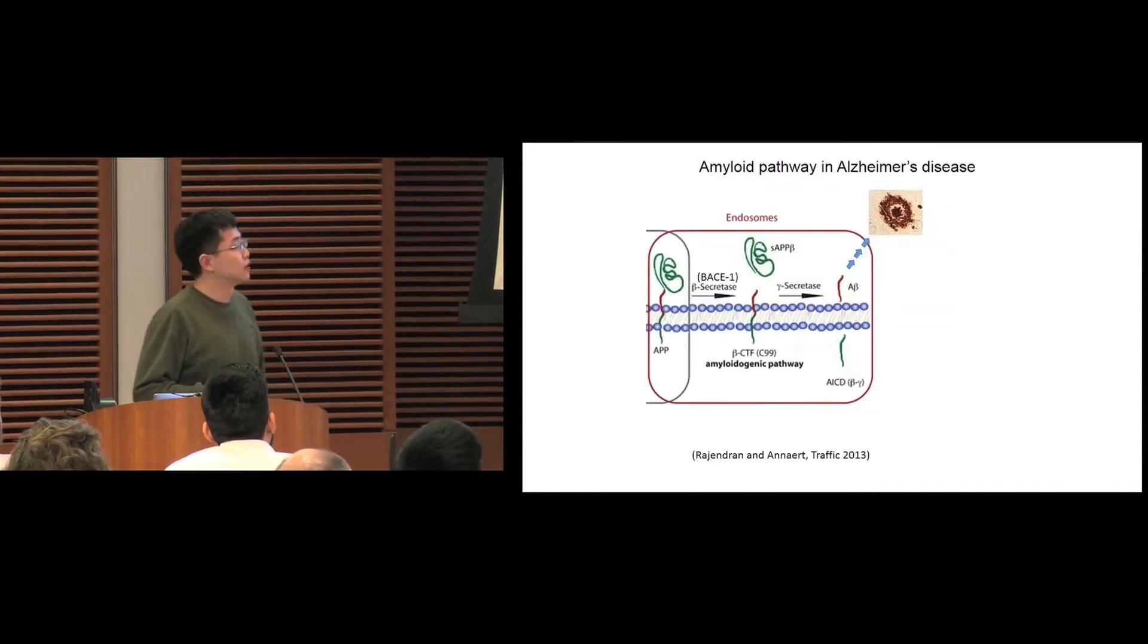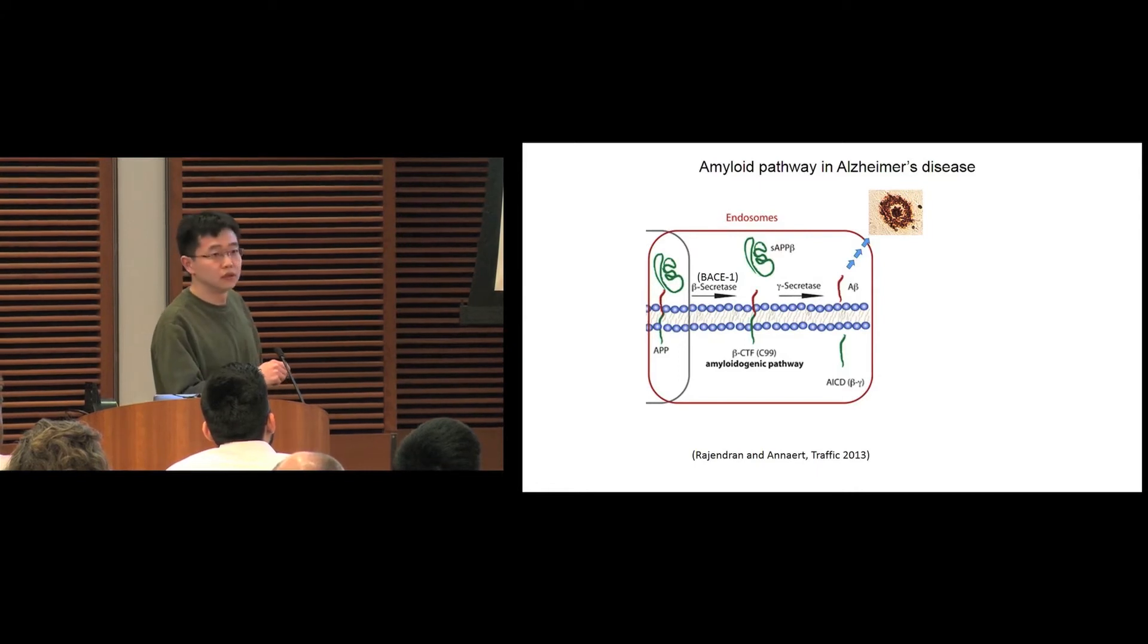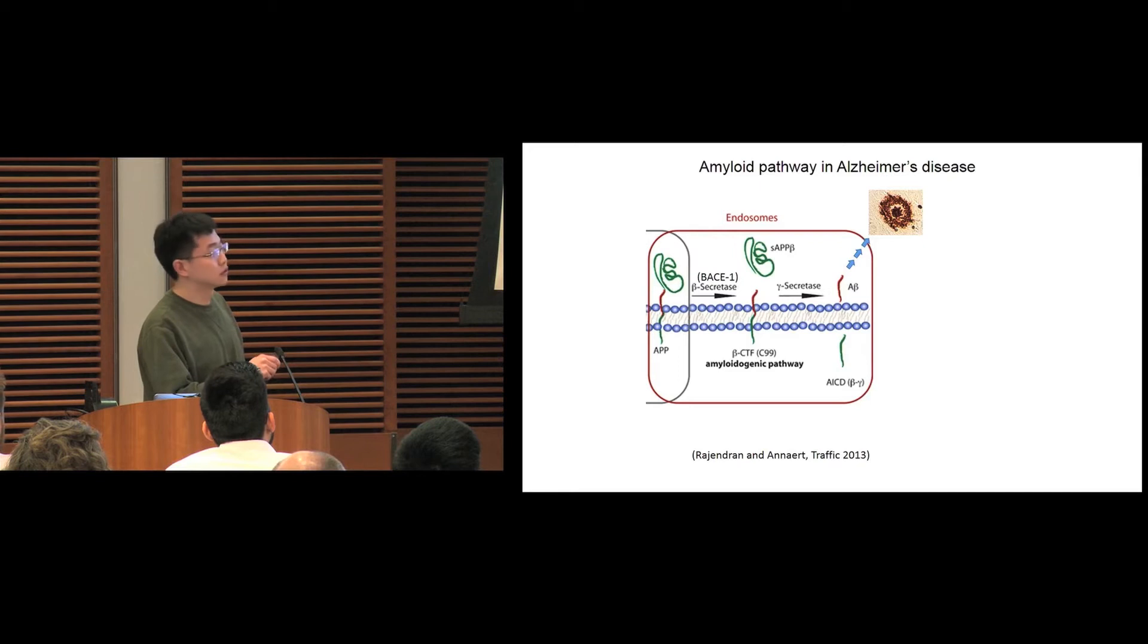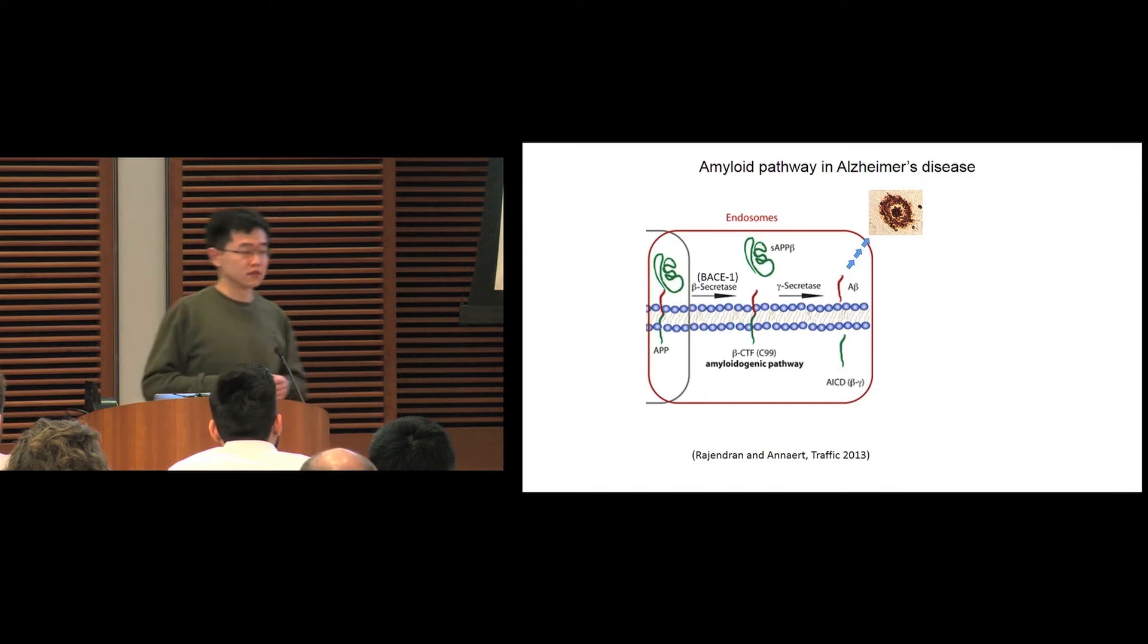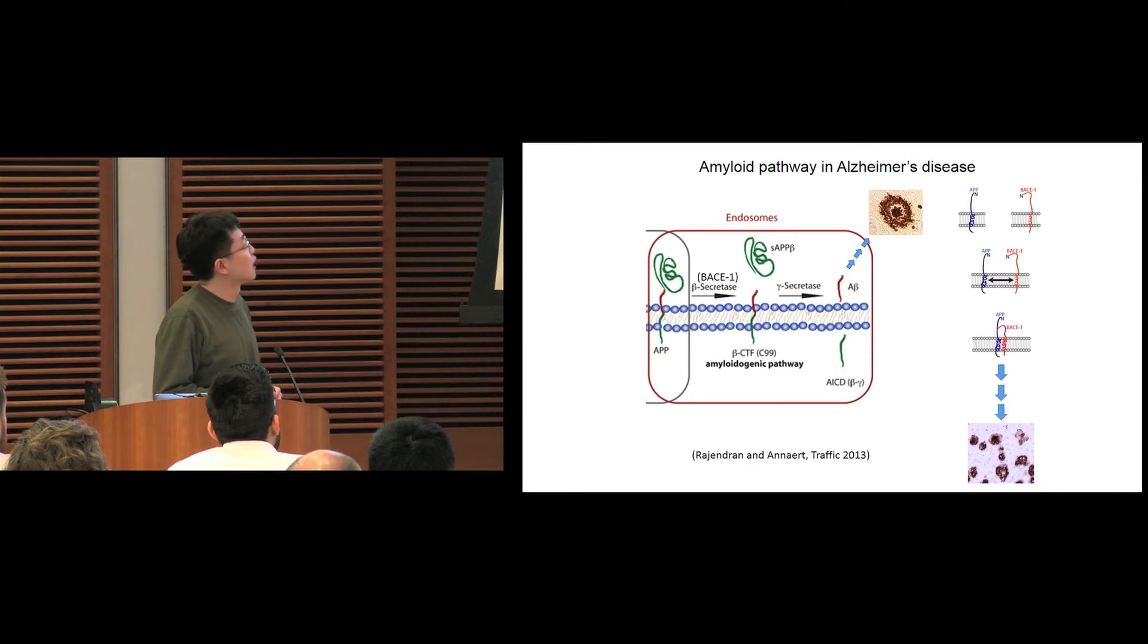Amyloid beta is generated from a precursor protein called APP. APP is a transmembrane protein with the N-terminal facing the extracellular domain and the C-terminal facing the intracellular domain. APP is first cleaved by beta secretase BACE1 to generate beta CTF, and then is further cleaved by gamma secretase to generate A-beta and intracellular AICD. A-beta can be secreted outside of cells. Excessive A-beta generation will induce its aggregation and plaque formation. Our lab focuses on the physical interaction between APP and BACE1, which is the rate-limiting step in A-beta generation.